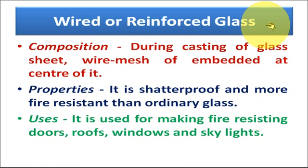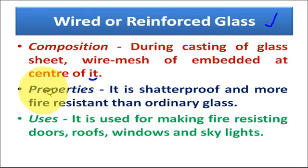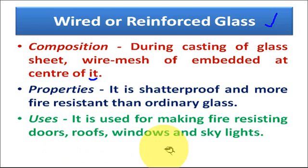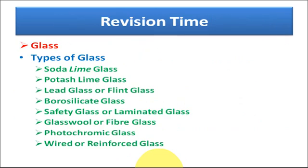Last is wired or reinforced glass. During the casting of the glass sheet, a wire mesh is embedded at the center of it. This reinforced glass is used for making fire-resisting doors, roofs, windows, and skylights, because it is shatter-proof and more fire-resistant than ordinary glass.